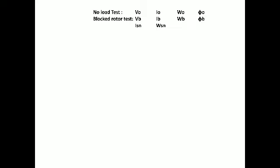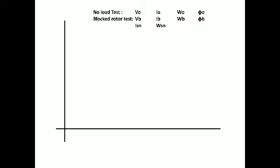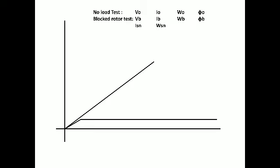To construct the diagram, first fix two scales — horizontal and vertical. Set the vertical scale as a current scale, then mark values related to ISN and I-naught. After fixing the scales, draw a line representing I-naught at angle phi-naught from the vertical axis. The end of this line should be marked as a reference point, and the horizontal line from this point is considered the reference line.